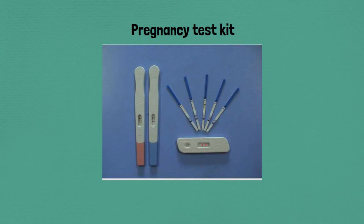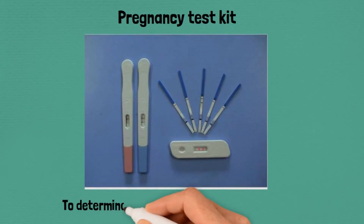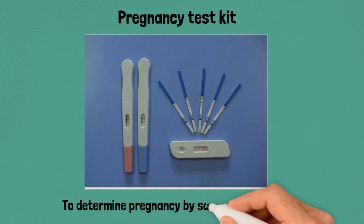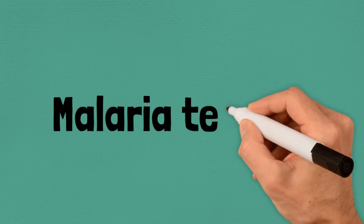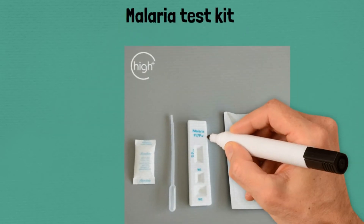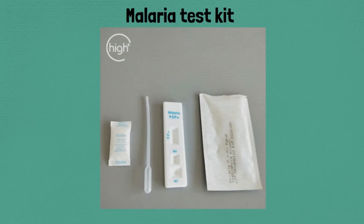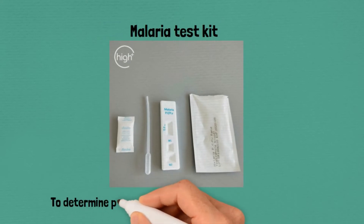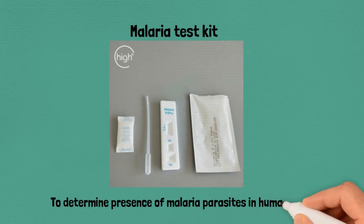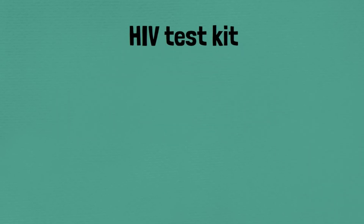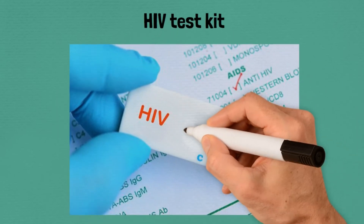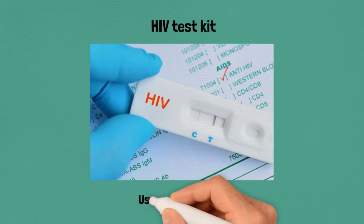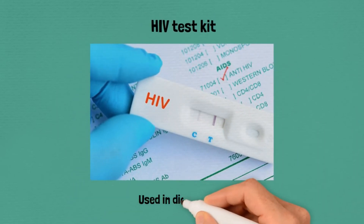Pregnancy test kits, used to determine pregnancy by sampling blood or urine. Malaria test kit, used to determine the presence of malaria parasites in human blood. HIV test kit, used in the diagnosis of HIV.